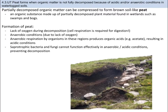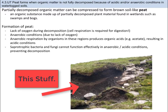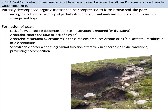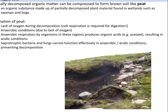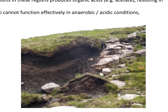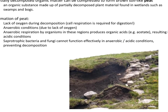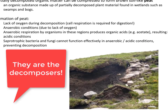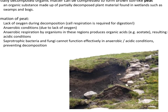Sometimes, when dead plants do not get fully decomposed due to acidic or anaerobic conditions, a brown soil-like substance called peat can form. This typically occurs in swamps, bogs, and wetland areas, and is composed of mosses, sedges, and shrubs. It forms at the rate of just one millimeter per year. The process: lack of oxygen causes anaerobic conditions; anaerobic respiration by organisms produces organic acids like acetates, resulting in acidic conditions; then saprotrophic bacteria and fungi can't function effectively, preventing decomposition. Peat is dead, partially decayed plant matter containing carbon.